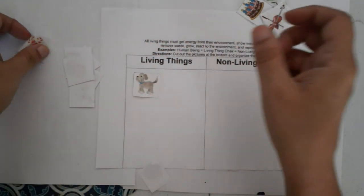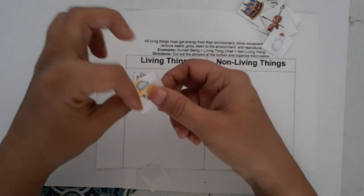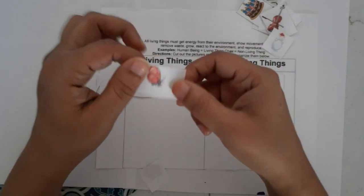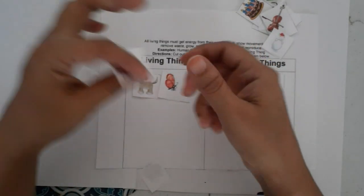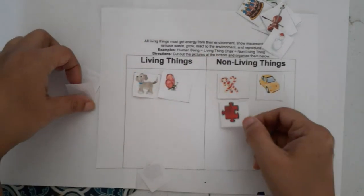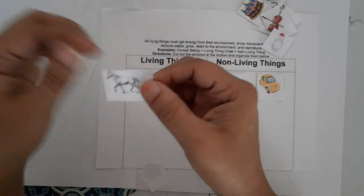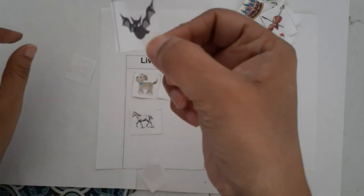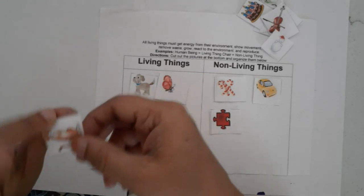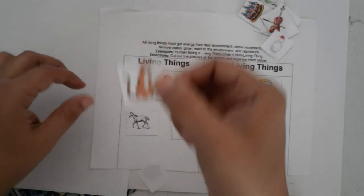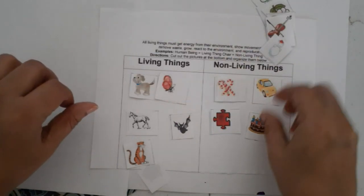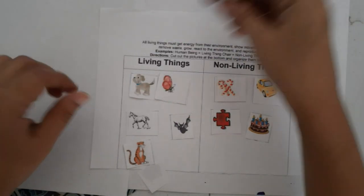This goes into the living category. A fly is living. A block is non-living. A horse is living. A tiger is living. A violin is non-living, and cake is non-living.